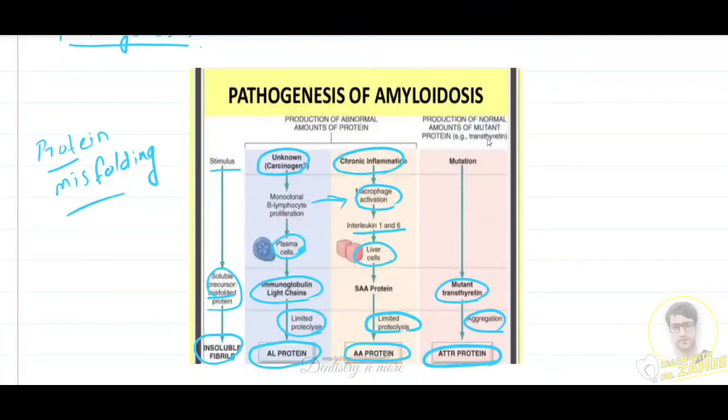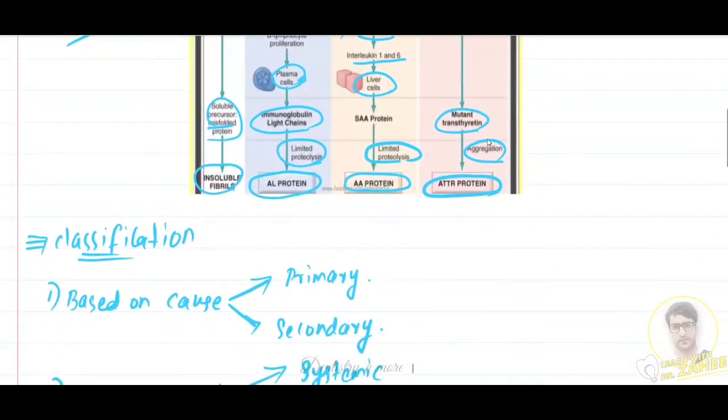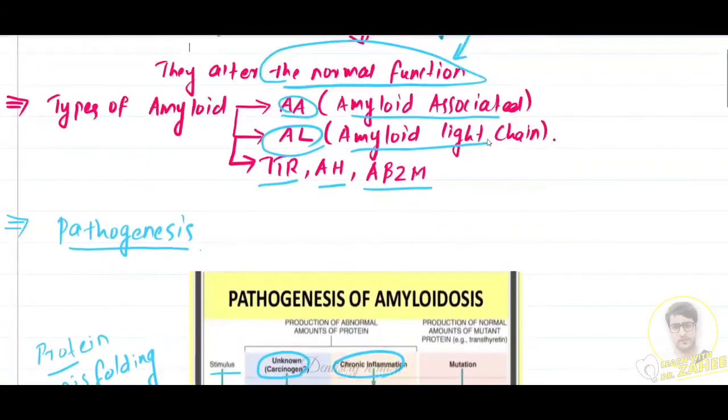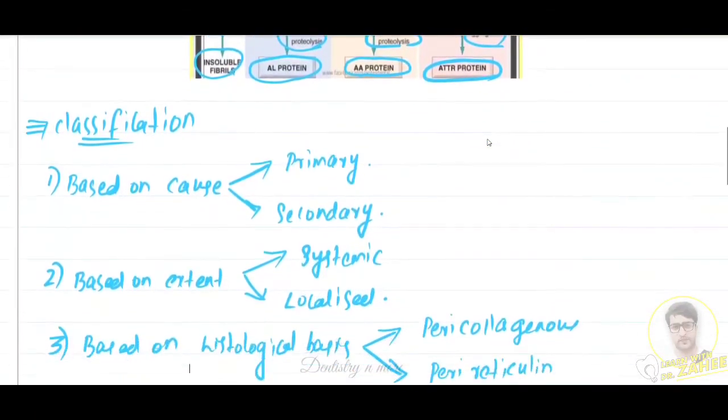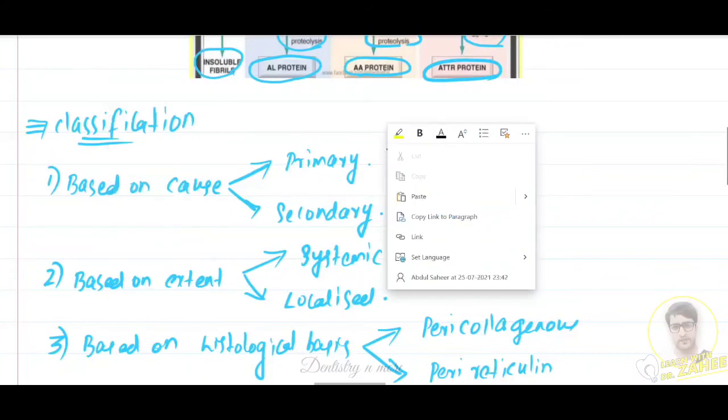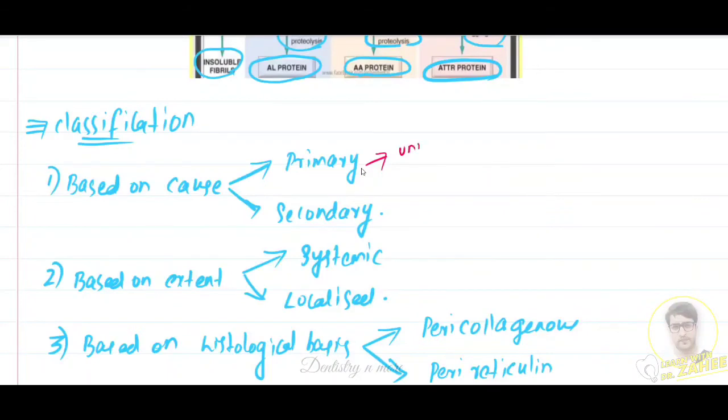We can classify amyloidosis based on cause. First one is primary and secondary. In primary, there is unknown cause and the deposition is in the organ itself. Whereas secondary occurs as a complication of some underlying disease - a complication of underlying disease.